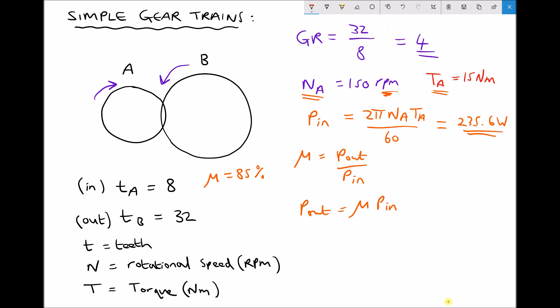Now we have something we can work with because our efficiency is 85%. Just take care here because we need to express that as a decimal. 0.85 times the input power of 235.6 is going to give us our output power. And our output power is just 200.3 watts.